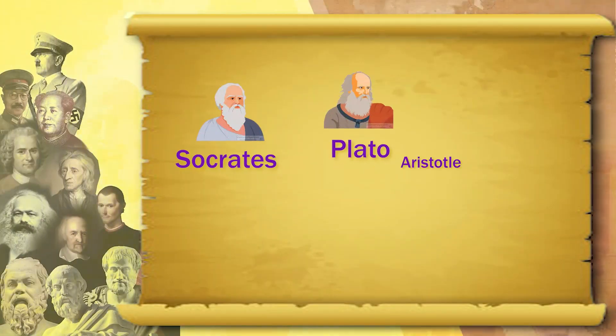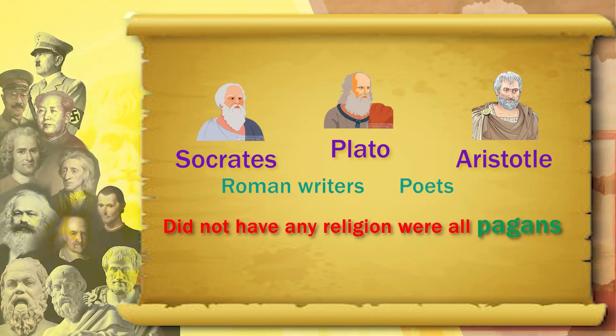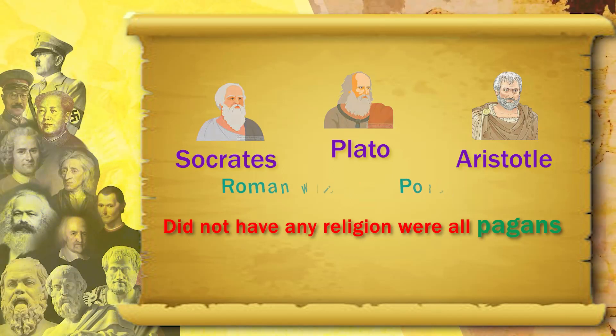Aristotle, Plato, Socrates, and even Roman writers and poets don't have any religion — they are all pagan. They might worship some god, but their philosophy is about secular things: justice and injustice, equality, jobs, education, health, civic life, social liberties, citizen rights, duties, liberties, truth, and falsehood. Philosophy is about morals, social life, civic life, and citizenry.